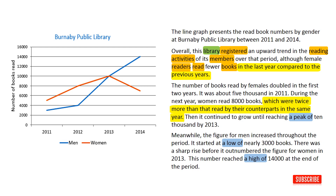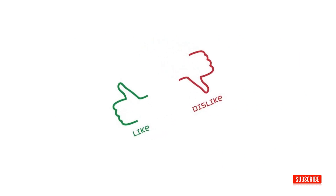I have written 151 words, which is within the required word length. You also should write no more words than that, because extra words are not counted as an extra band. Now, you give me a band score for my writing.